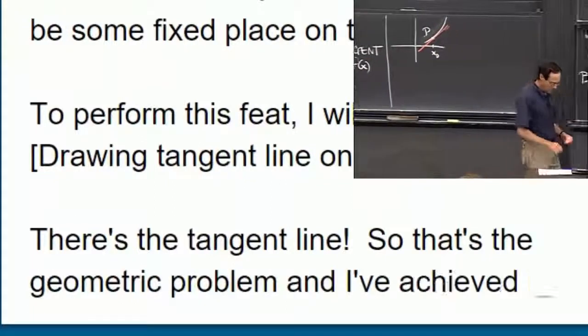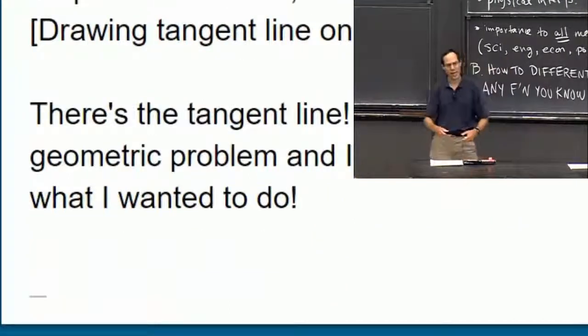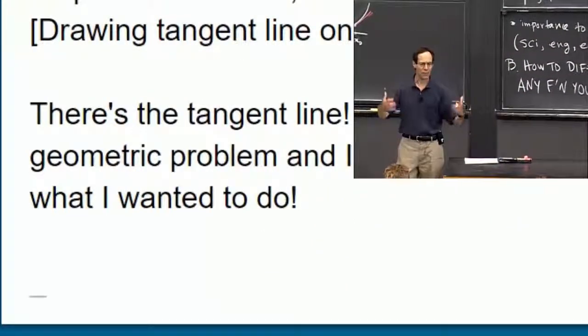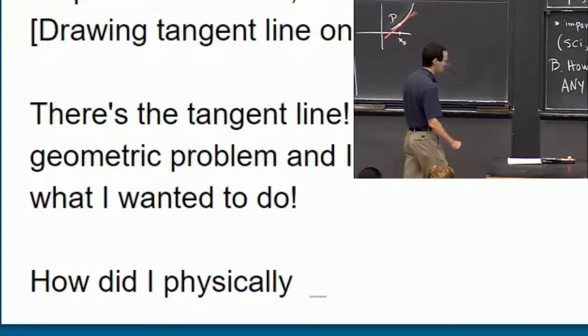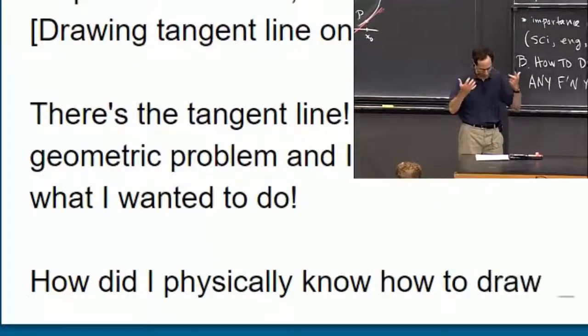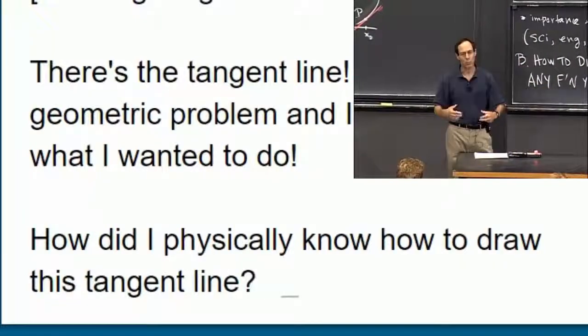And it's kind of an interesting question, which unfortunately I can't solve for you in this class. Which is, how did I do that? That is, how physically did I manage to know what to draw this tangent line? But that's what geometric problems are like. We visualize it, we can figure it out. Somewhere in our brains it happens.